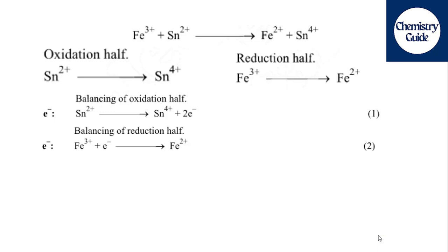Next we balance the reduction half. There is an increase of one positive charge on the left side with Fe³⁺, while on the right side there is Fe²⁺. So we add one negative charge — one electron — on the side of Fe³⁺, and in this way both sides will be balanced.